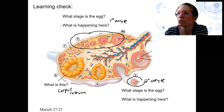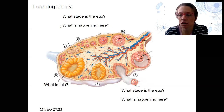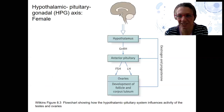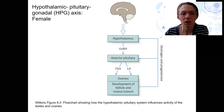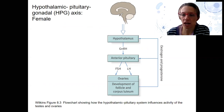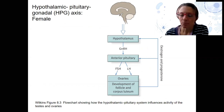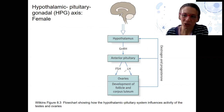We have one last thing to do in these videos, and that is talk about the hormones that control the ovulatory cycle. Instead of drawing it out again, I'm going to show you the HPG axis in females. This looks pretty simple, but the regulation of this process over the month is actually really complicated.